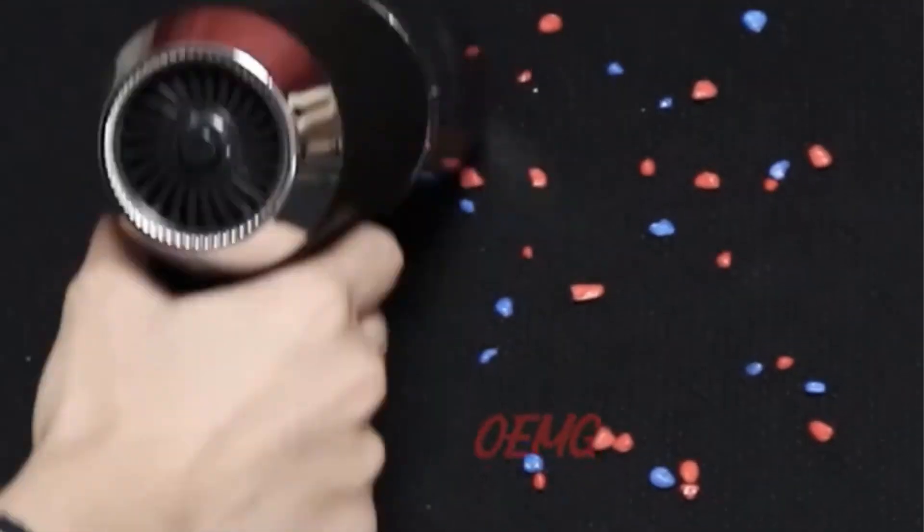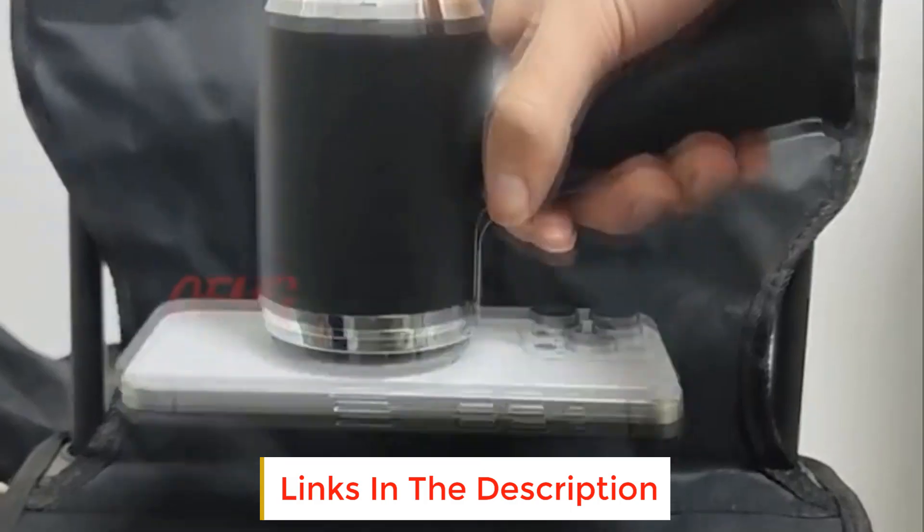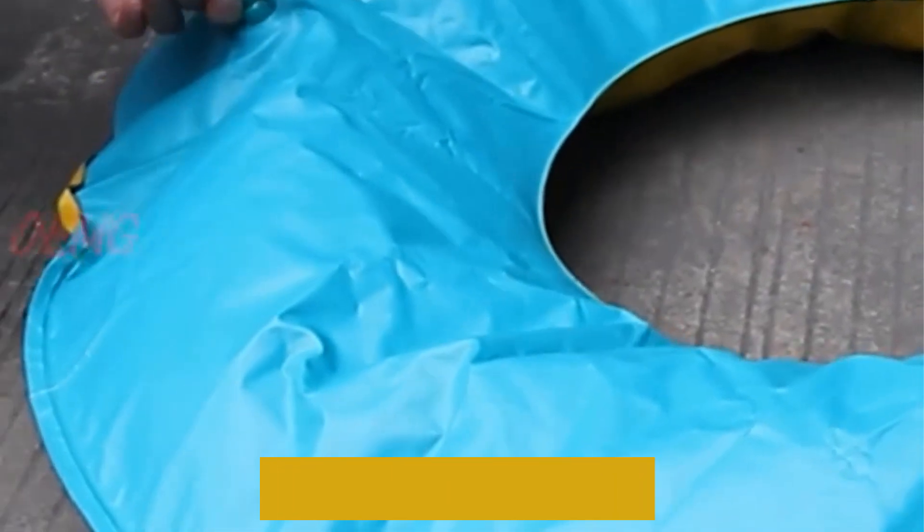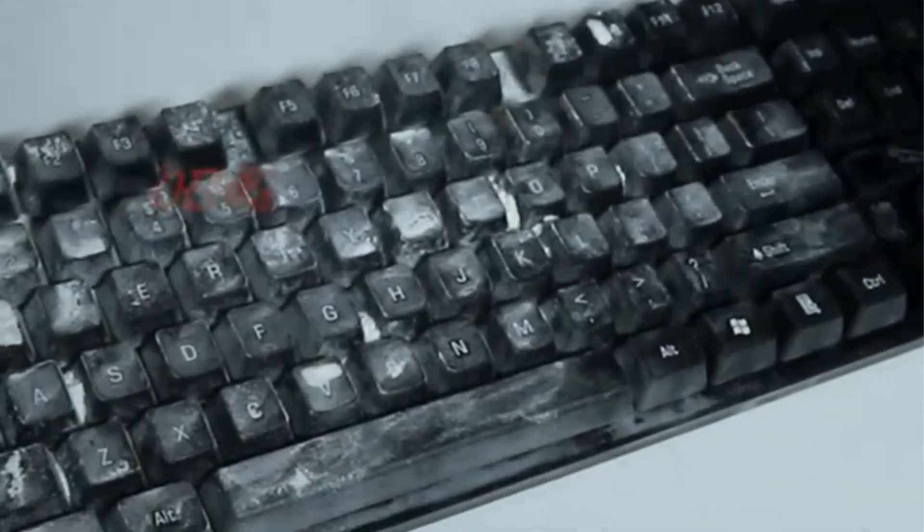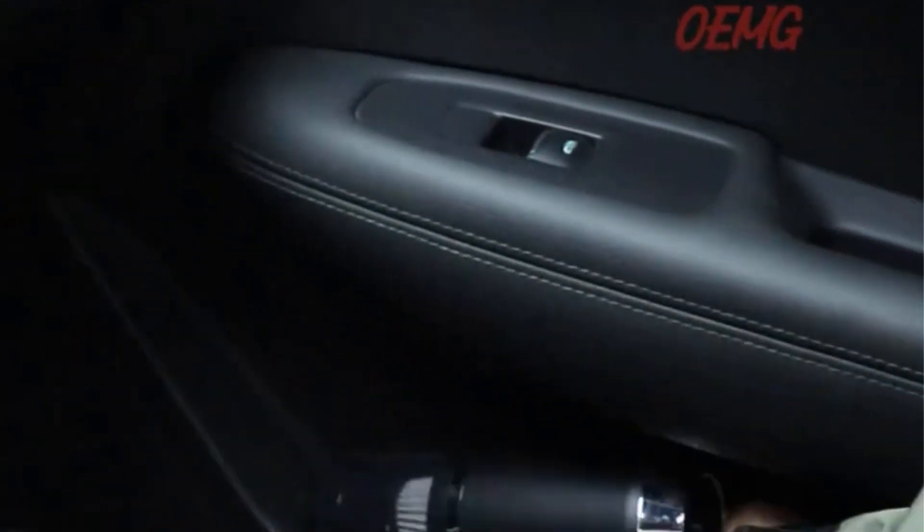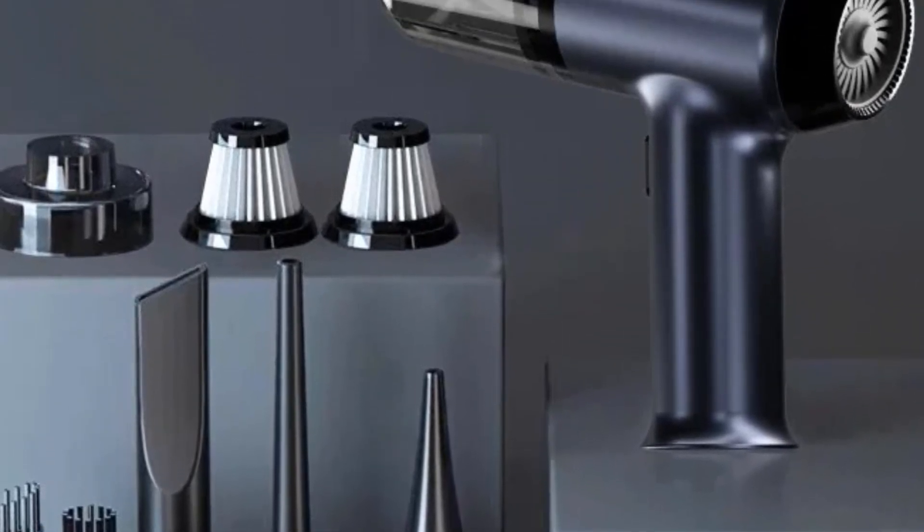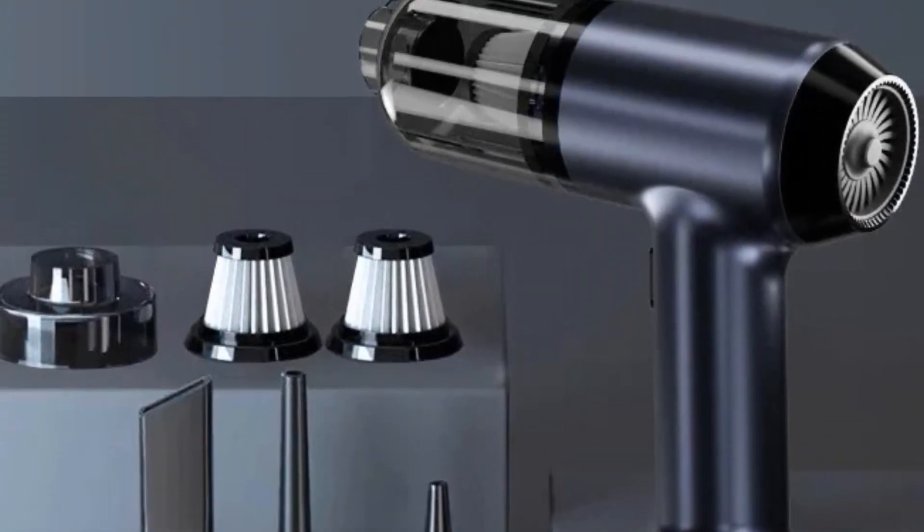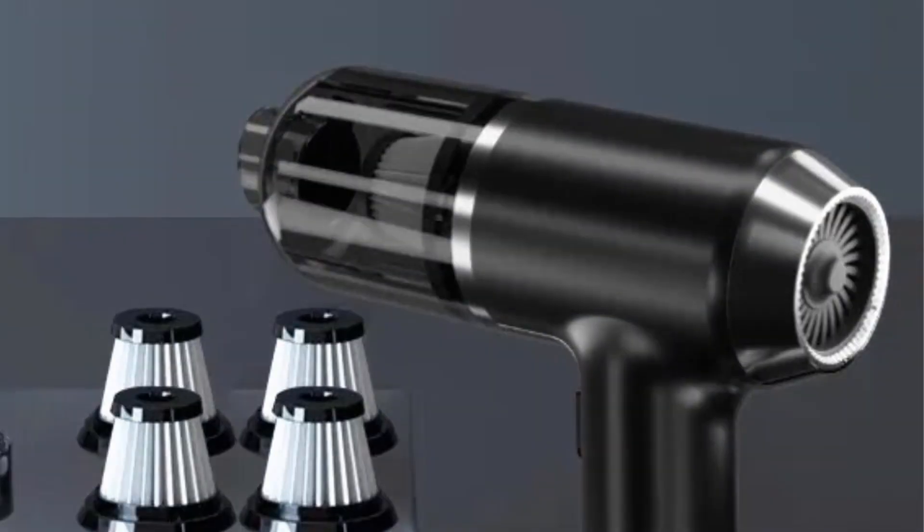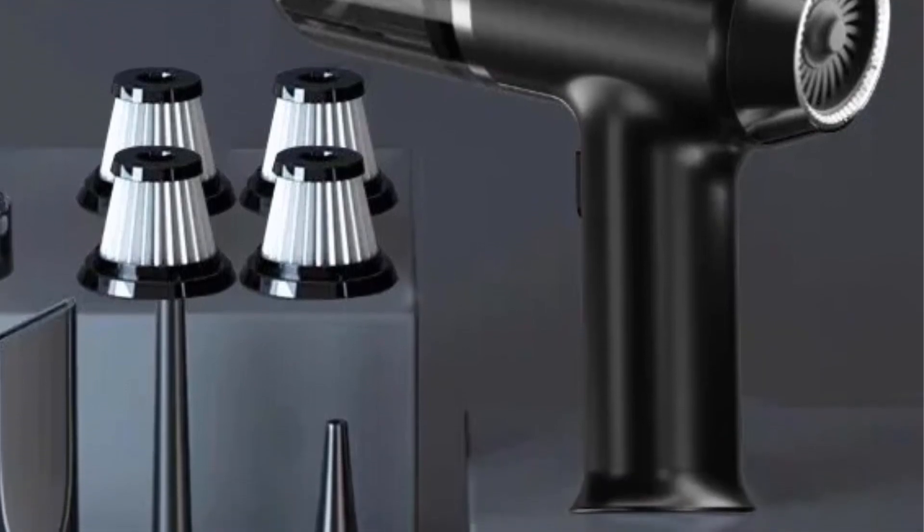Experience unparalleled cleaning performance with an extraordinary 140,000 PA suction power. This car vacuum cleaner ensures powerful and efficient removal of dirt, debris, and dust from your car interior and various home appliances. With a unique dual purpose functionality, this vacuum cleaner effortlessly transitions from powerful suction to a mini blower, providing a comprehensive cleaning solution for a wide range of surfaces both in your vehicle and at home. Enjoy the freedom of wireless cleaning with a portable design.